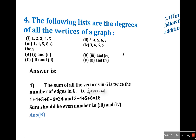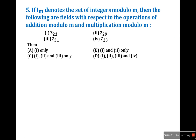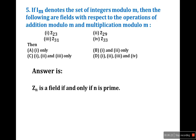Fifth question: if Z_n denotes the set of integers modulo m, which of the following are fields with respect to addition modulo m and multiplication modulo m? This is theorem-based: Z_n is a field if and only if n is prime.